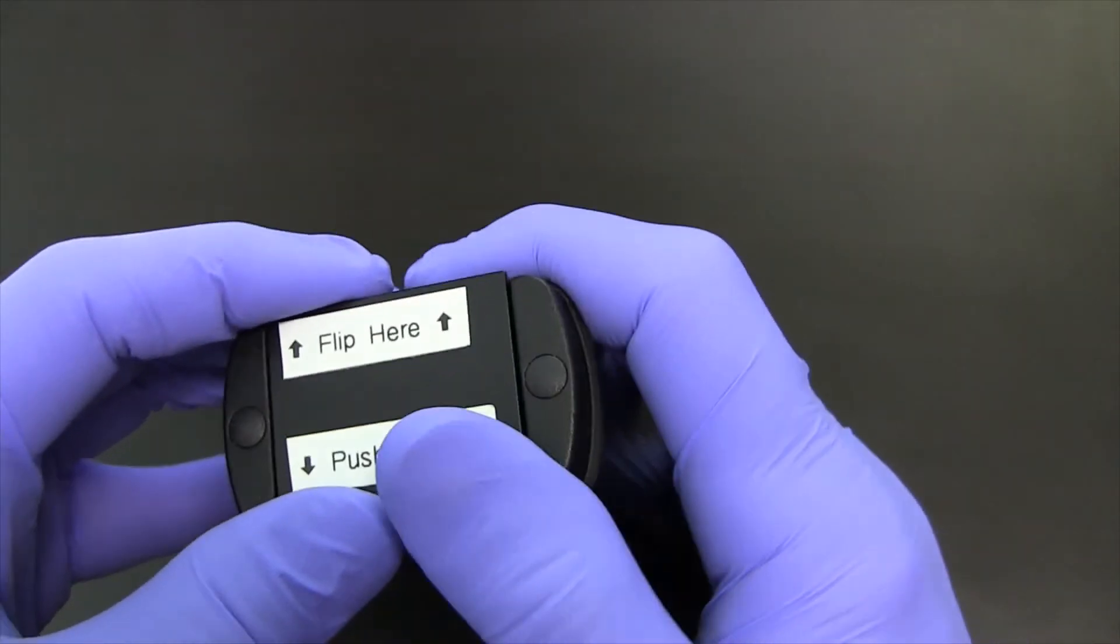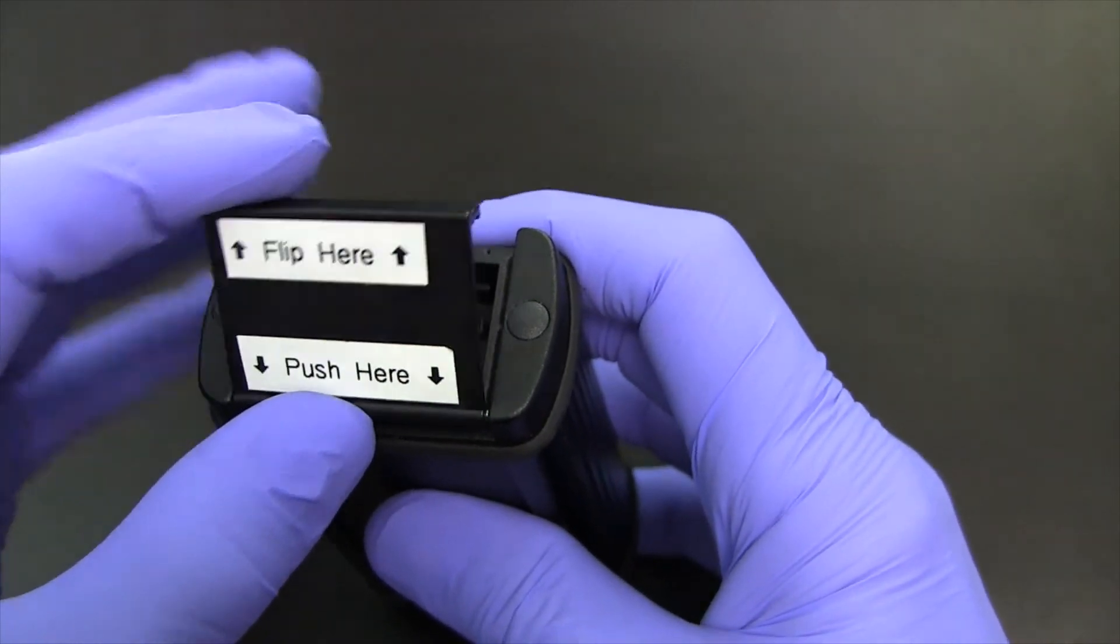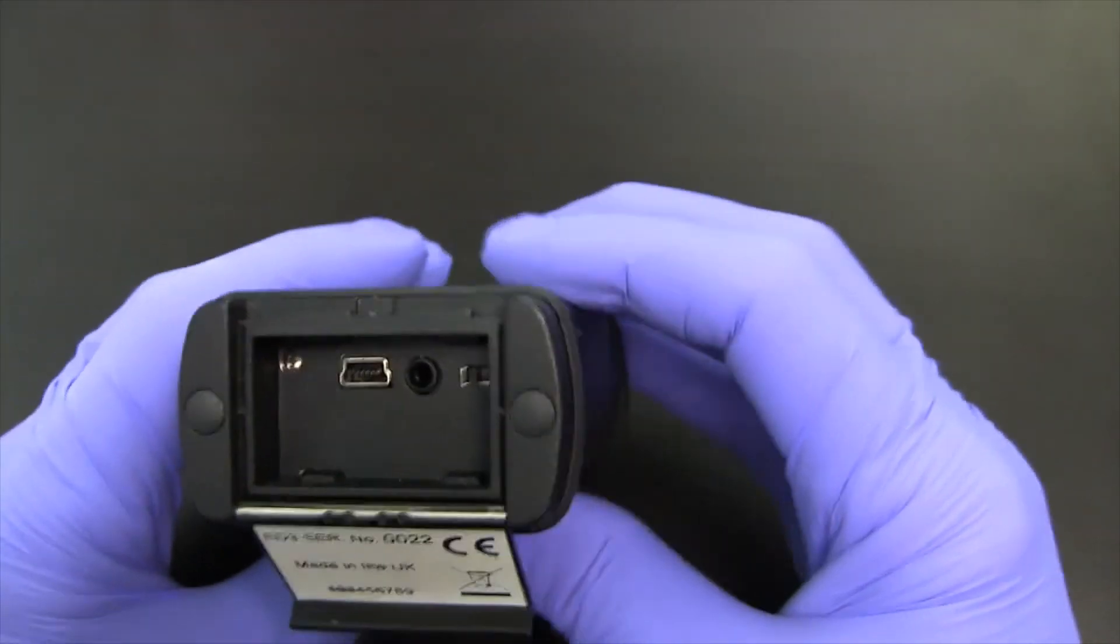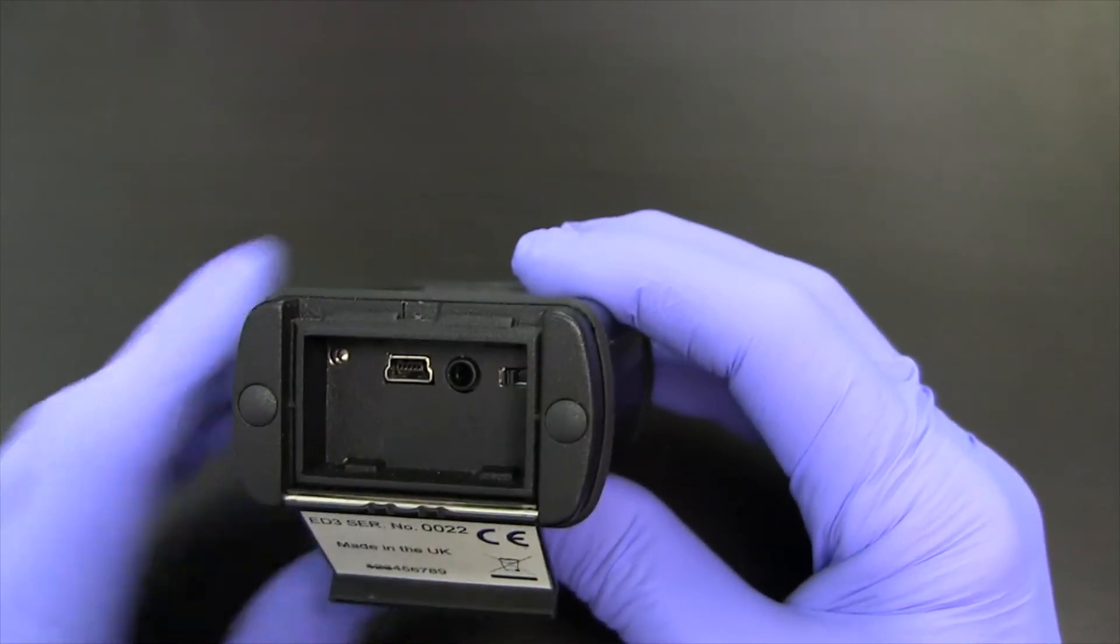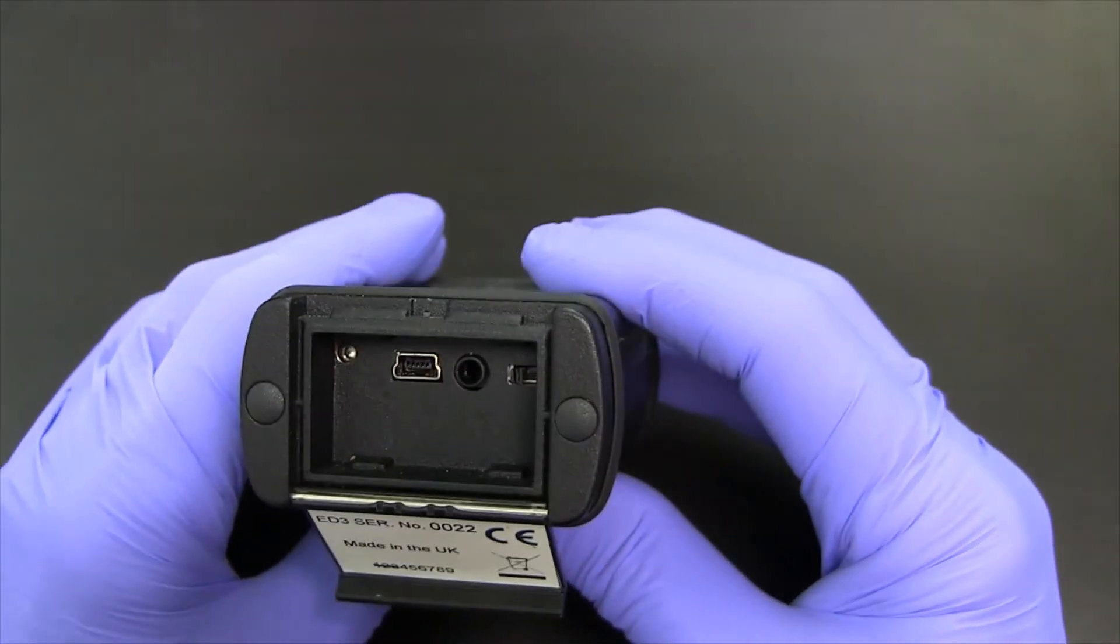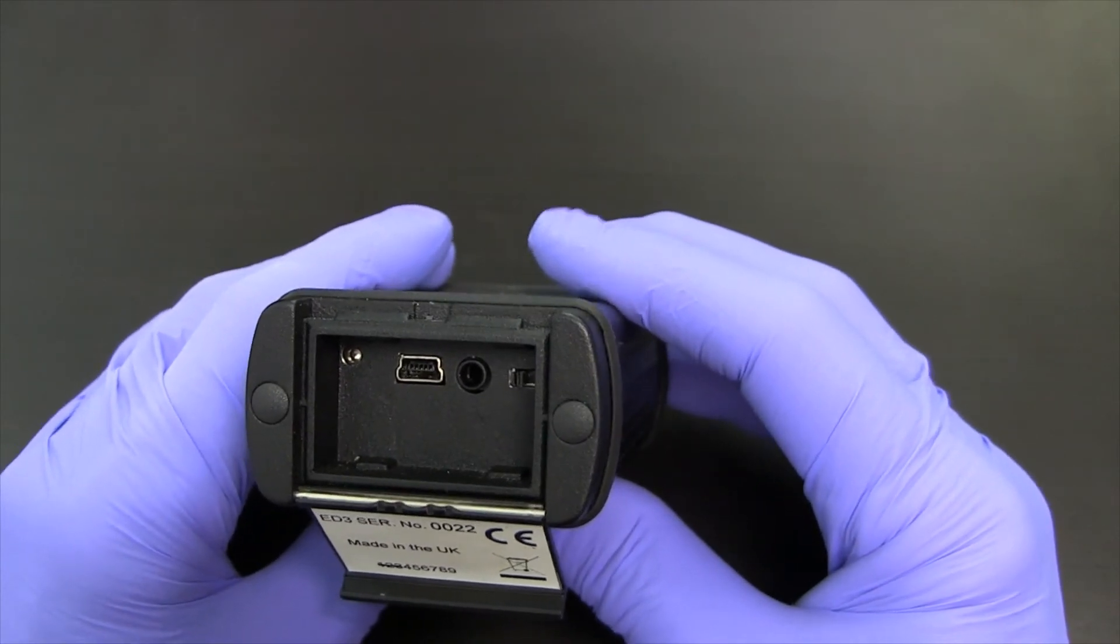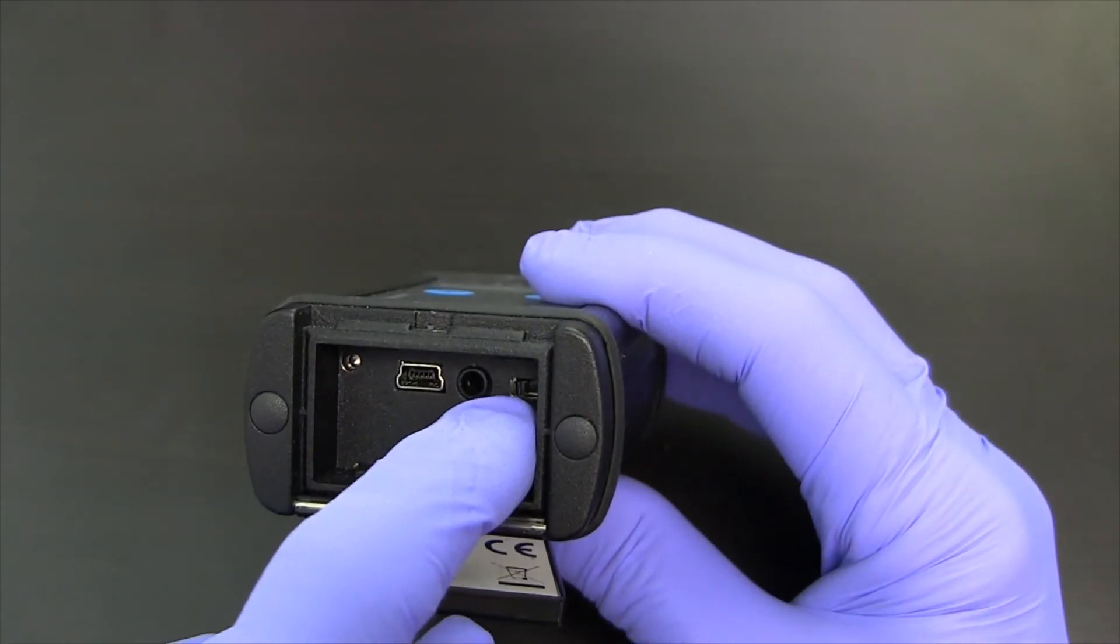On the back, you push on the back end here, and then flip the unit open, and you'll see connectors for USB, which is a way to extract the data from the unit after use, a power adapter for charging the internal battery, and then also switch to turn the unit on and off.